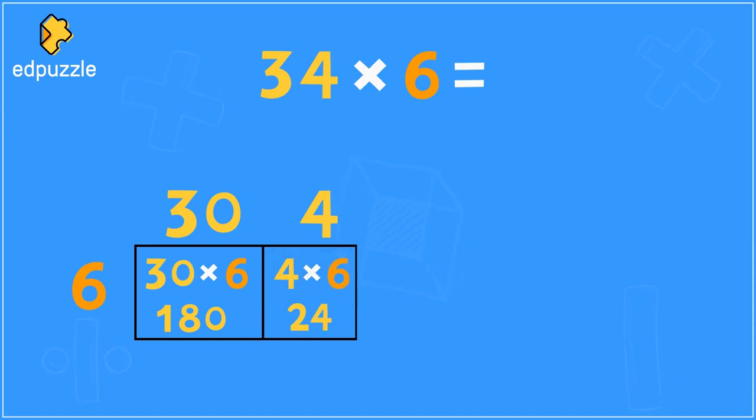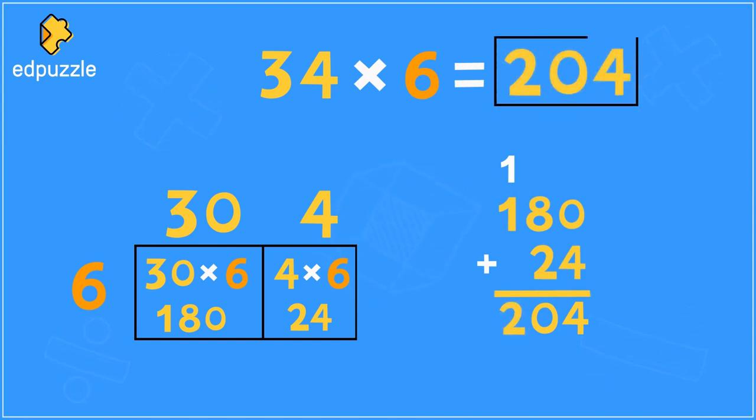Now that I've finished multiplying both parts of my area model, what do I need to do to find my answer? Well, now that you have your pieces, you need to add them together. So we will add 180 plus 24. What does 180 plus 24 equal? Well, we can do 0 plus 4 equals 4, 8 plus 2 equals 10, which we can write by regrouping the 1 and holding the 0 down below. And then 1 plus 1 equals 2. So 34 times 6 equals 204.